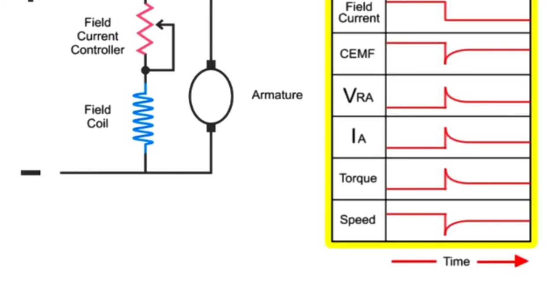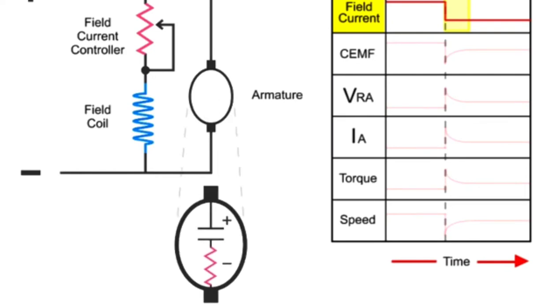Here we have a series of line diagrams to illustrate the relationships of the motor properties as a result of reducing current to the armature. When the field current is decreased, the counter-electromotive force, or CEMF, drops off dramatically.